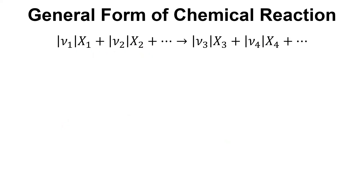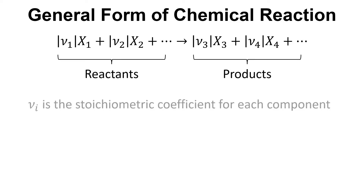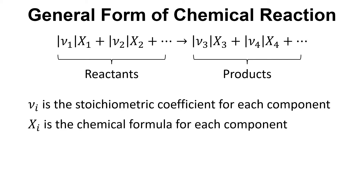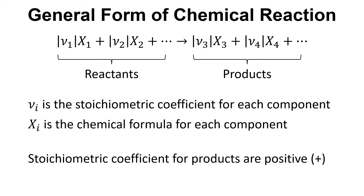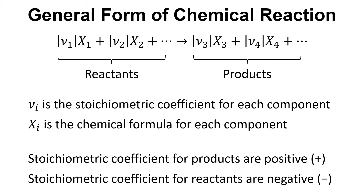The general form of a chemical reaction we're going to use is shown here. We have the reactants and the products, the stoichiometric coefficients for each component, and the chemical formula for each component. The stoichiometric coefficients for the products are positive because they're being created, and the stoichiometric coefficients for the reactants are negative because they're being consumed.